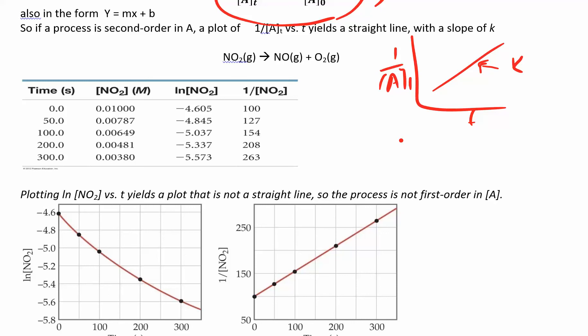And whichever one, only one is going to give you a straight line. If you plot just concentration versus time, and that's a straight line, then that would be zeroth order. If you plot natural log versus time, and that was straight, then that's first. If you do one over concentration versus time, and you get a straight line, then that's a second order.